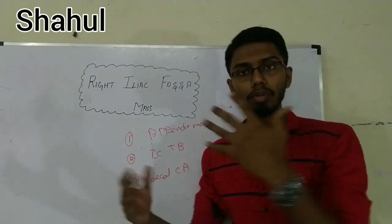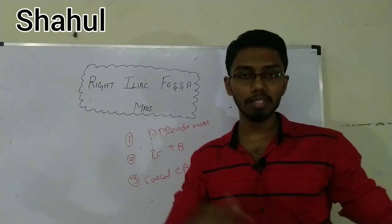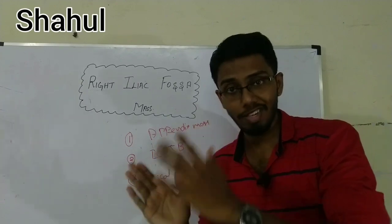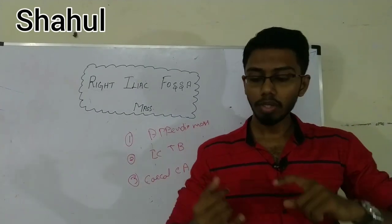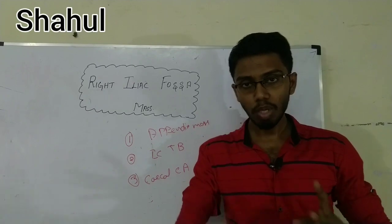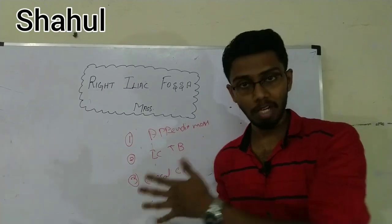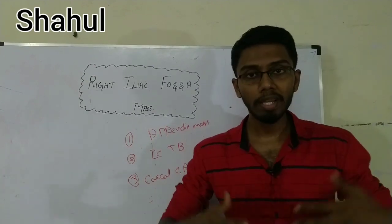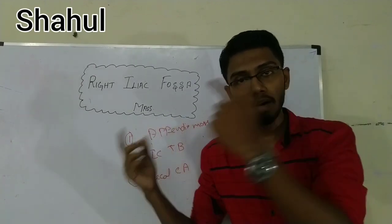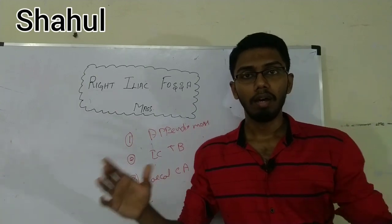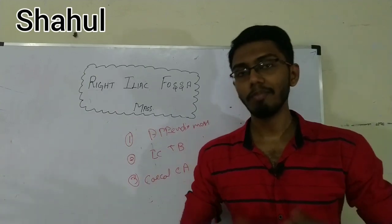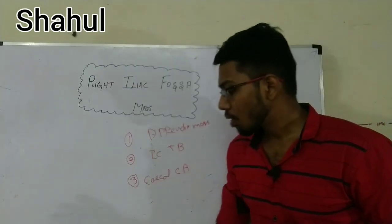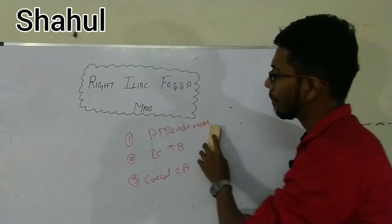After knowing all those features, it will be easier to take relevant histories. Assume you are a surgeon sitting in an outpatient clinic — how will a right iliac fossa mass patient present to you? The most common complaint is abdominal pain, especially right iliac fossa pain, or features of obstruction like vomiting, abdominal distension, constipation, sometimes diarrhea. Pain is a very important finding.